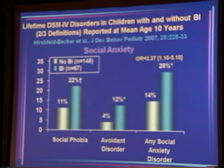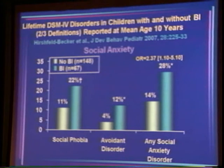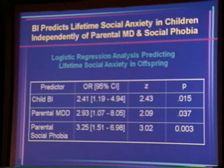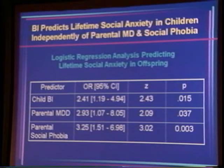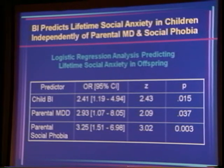At 10-year follow-up, we found essentially the same pattern. The only anxiety disorder significantly predicted by behavioral inhibition was social anxiety disorder. Looking at any social anxiety disorder — either social phobia or avoidant disorder — it was significantly higher in inhibited children. A logistic regression showed that BI, parental major depression, and parental social phobia all independently predict social phobia. This is significant because BI adds predictive value above and beyond knowing that a parent had depression or social phobia, identifying a subgroup within kids already at high risk.